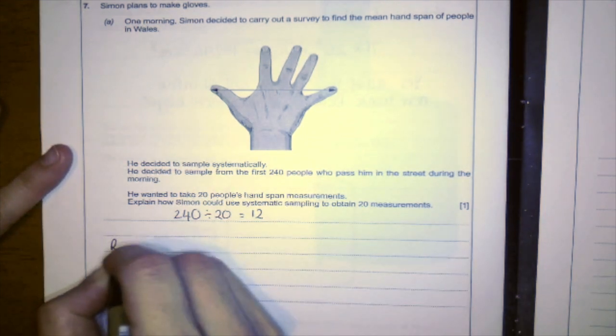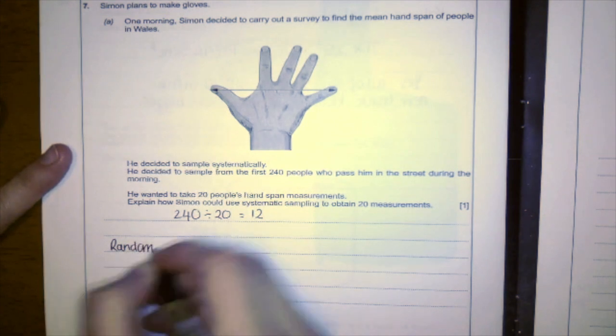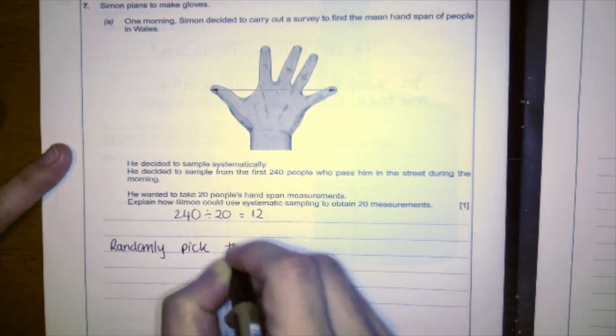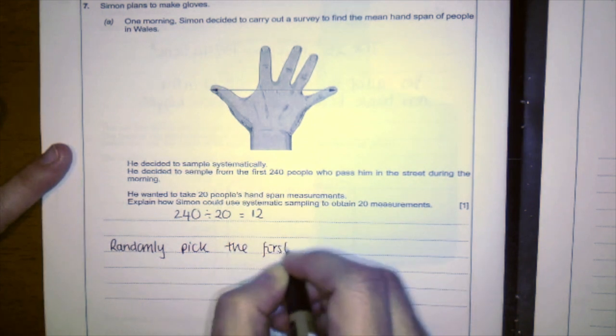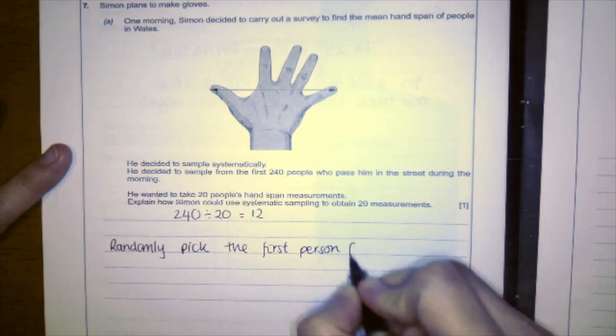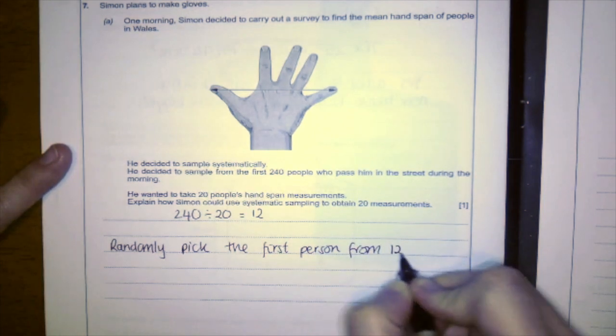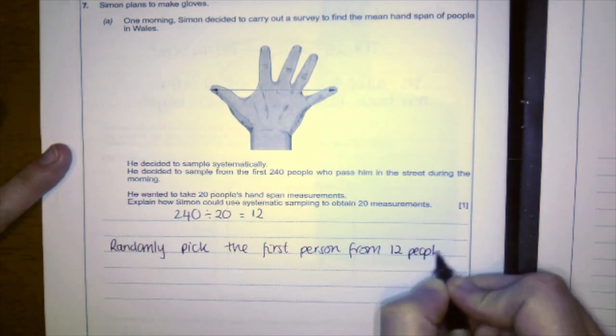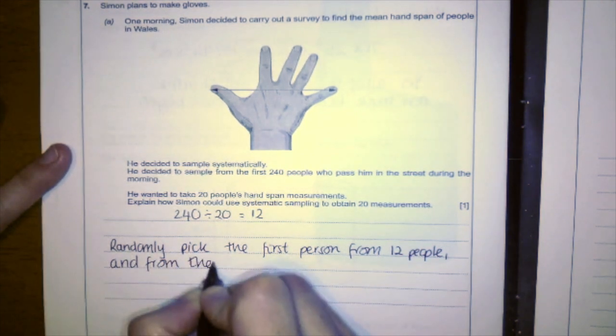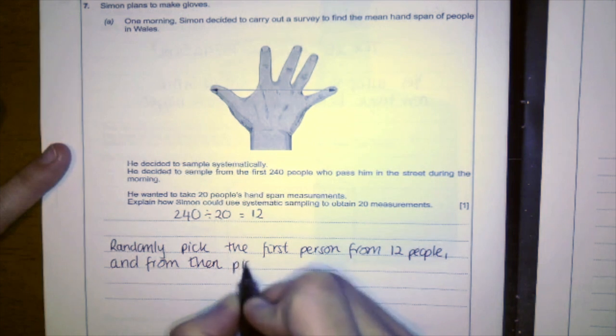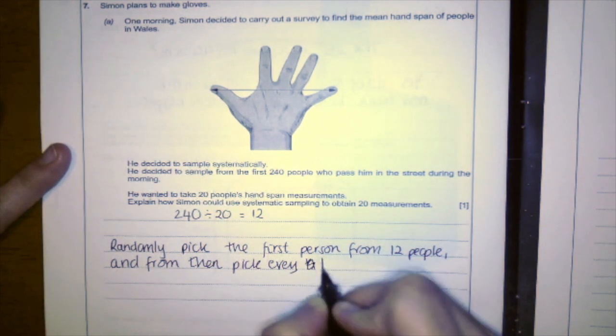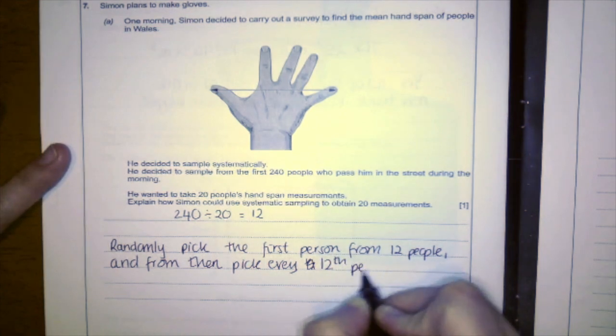So what we need to write is: randomly pick the first person from 12 people, and from then pick every 12th person.